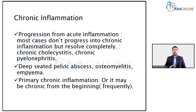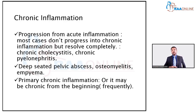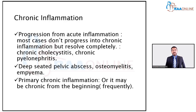Deep-seated pelvic abscesses — near the ovary or elsewhere in the abdomen — can progress to chronic inflammation. An abscess is an accumulation of pus which can lead on to chronic inflammation. Similarly, osteomyelitis, inflammation of the bone, if it doesn't settle, goes on to chronic inflammation. Accumulation of pus in the thorax, known as empyema, is another example.